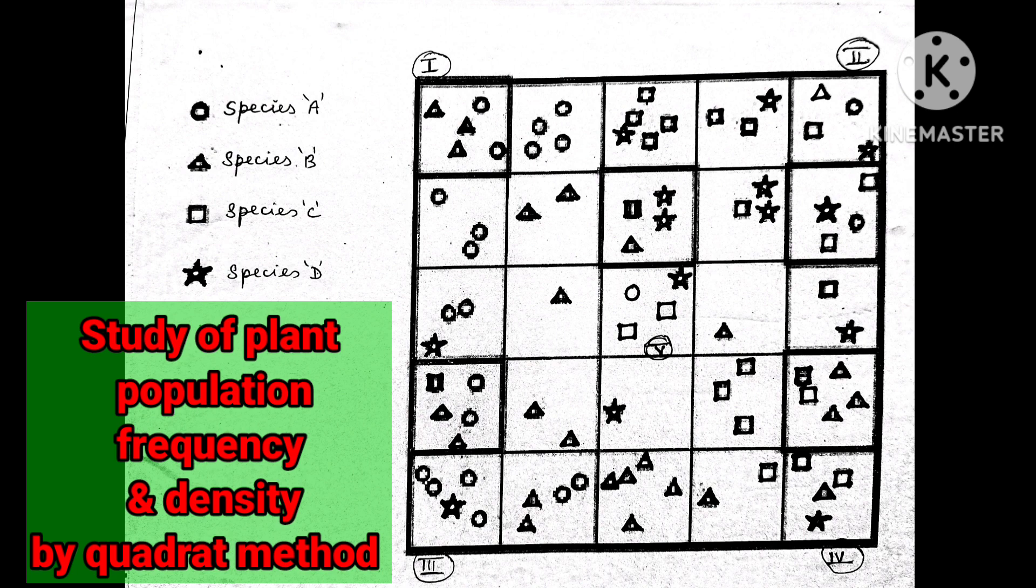For this purpose we have drawn quadrants. Can you observe first, second, third, fourth and the fifth one is in the center - four towards the corners. Here species A has been marked in the form of circles and species B in the form of triangles and species C in the form of squares and species D in the form of star-shaped structures.